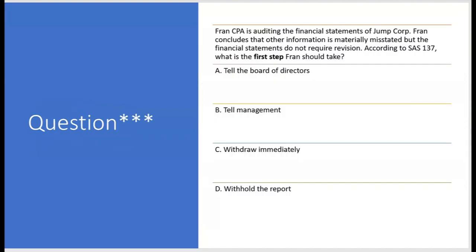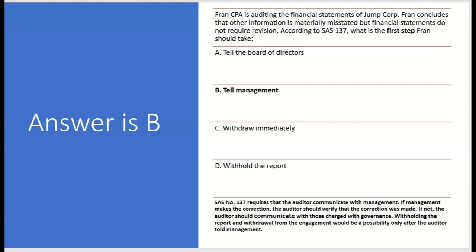Fran CPA is auditing the financial statements of Jump Corp. Fran concludes that other information is materially misstated, but the financial statements do not require revision. According to SAS 137, what's the first step Fran should take? The answer is tell management — letter B. First you go to management; if they correct it, you verify it. If they don't correct it, then you go to governance. C and D could not be right because you wouldn't withdraw immediately or withhold the audit report — you tell management first.